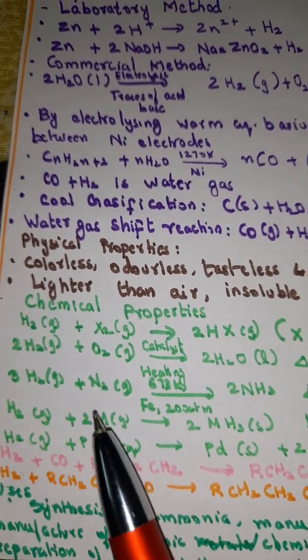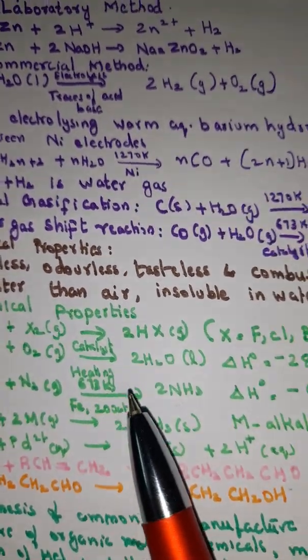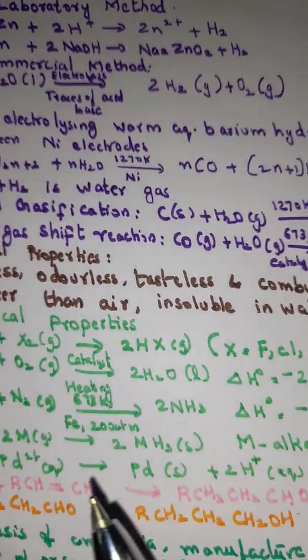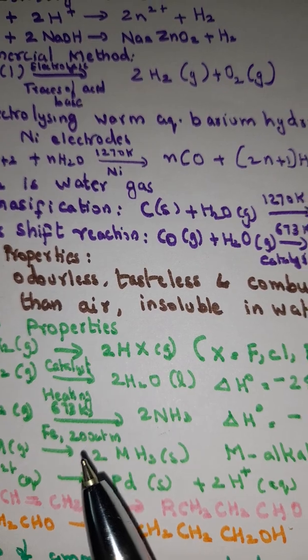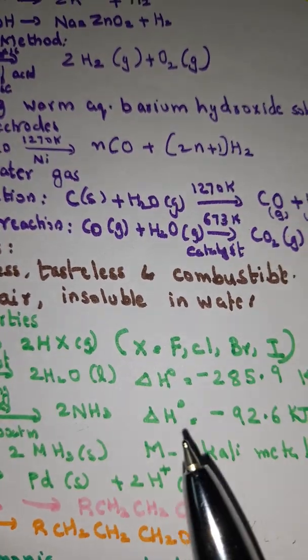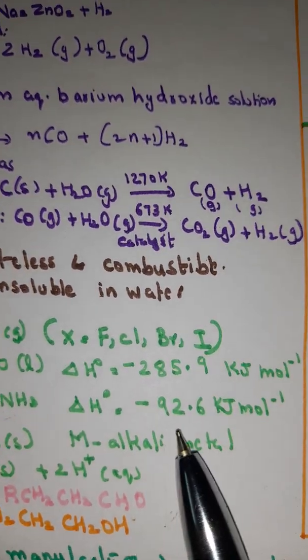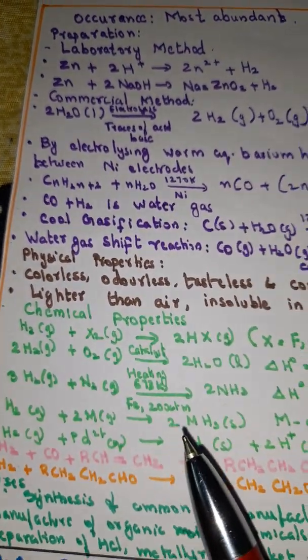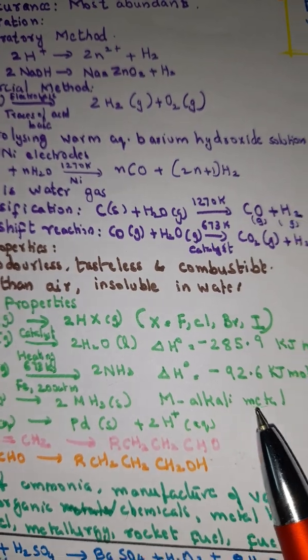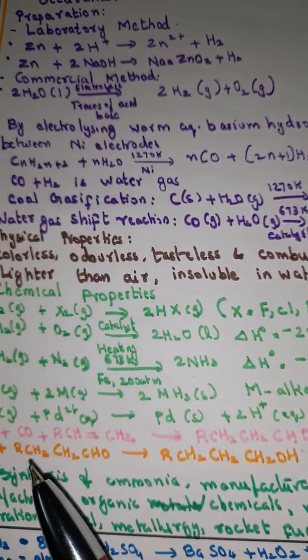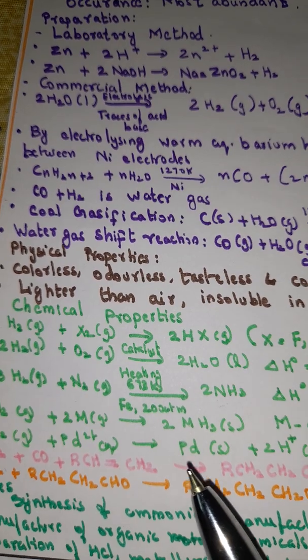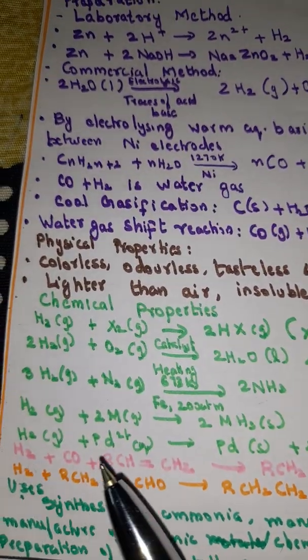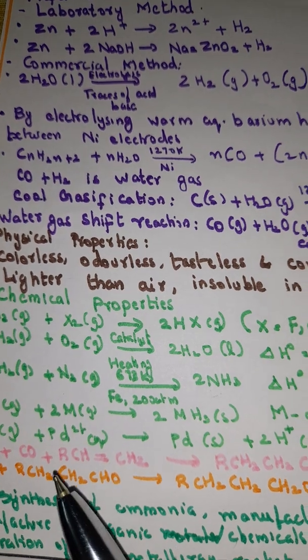2H2 + O2 under catalyst gives 2H2O. ΔH = -285.9 kJ/mol. 3H2 + N2 at 673 Kelvin with iron catalyst under 200 atmosphere gives 2NH3. ΔH = -92.6 kJ/mol. H2 + 2M gives 2MH where M is alkali metal.